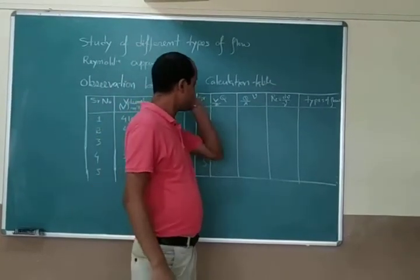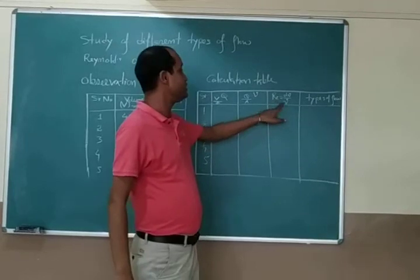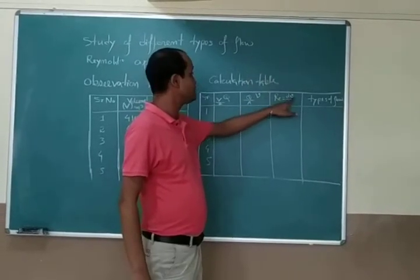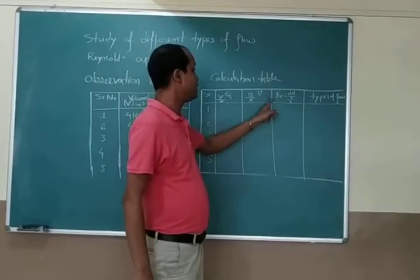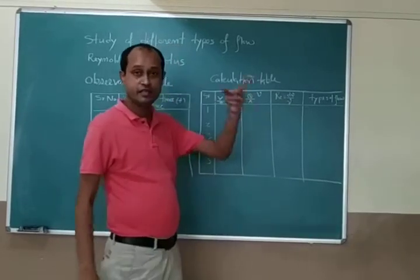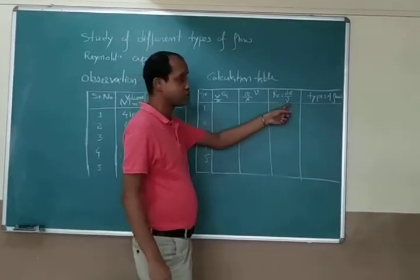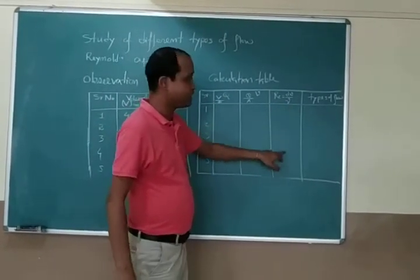Small v is your average velocity. This is given by Q by area. Area is already given. After that, we have to put the value of Reynolds number: d is the diameter, small v this thing, and mu is already given, kinematic viscosity. Here you will find out the values.